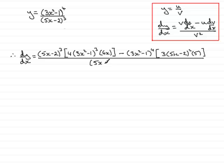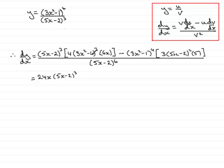This looks really complicated, but what we need to do is simplify each term on the top. We have two terms on the top. Looking at the first term, we can multiply 6 by 4 to get 24, giving 24x. Then we write (5x minus 2) cubed and (3x squared minus 1) all cubed. That's the cleaned-up version of the first term.